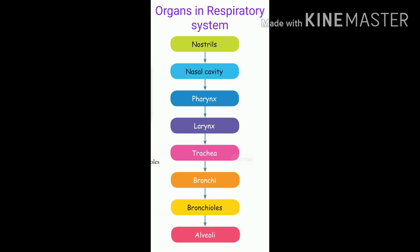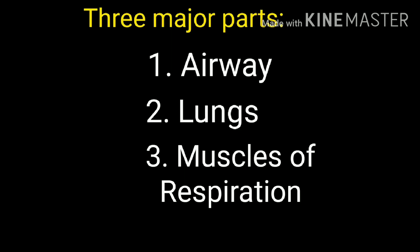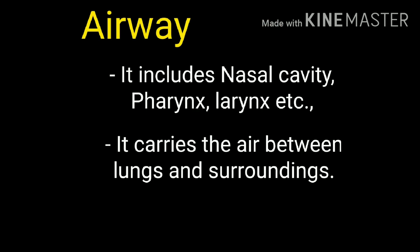There are also three major parts in the respiratory system. The three major parts are: airway, lungs, and the muscles of respiration. Again: airway, lungs, muscles of respiration. First, airway.